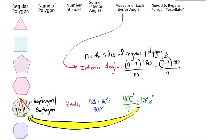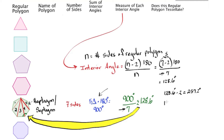So in this case, we have seven sides: 7 minus 2 is 5, times 180, divided by 7, gives us 128.6 degrees — the same as before. The question is, does this regular polygon tessellate? We know that the interior angles must add up to 360 degrees.